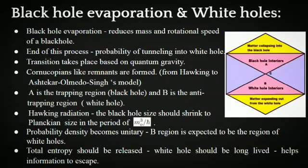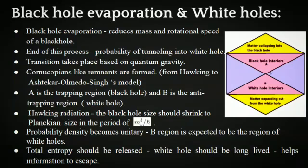Black hole evaporation reduces the mass and total rotational speed of a black hole, thus it shrinks and eventually disappears. Towards the end of this process there is an elevated probability of tunneling into a white hole. The transition takes place based on quantum gravity, forming cornucopian-like remnants, as suggested by many models from Hawking to recent Ashtekar-Allman-Singh's model using loop quantum gravity. This is a simple model illustrating the scenario. Space above the central singularity A is a trapping region — that is the black hole interior — and B is an anti-trapping region, which is the white hole interior. Matter collapses into the black hole and matter expands out from the white hole.